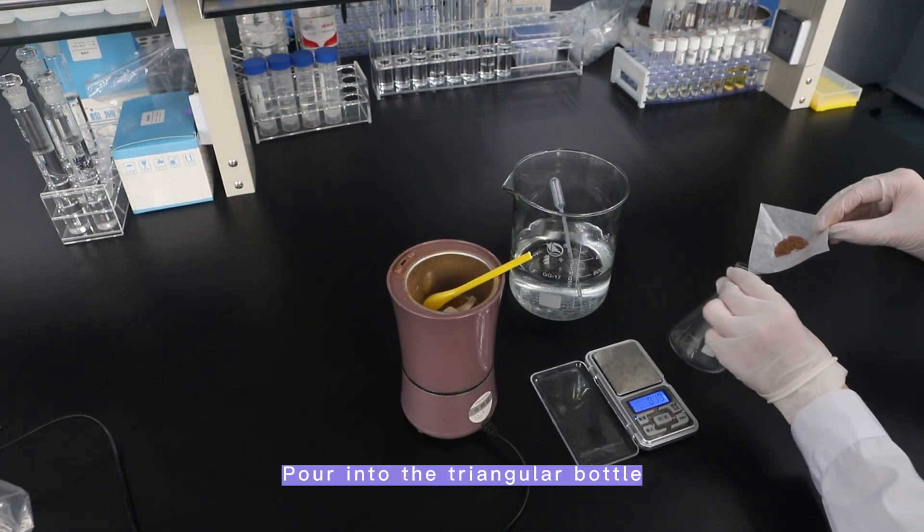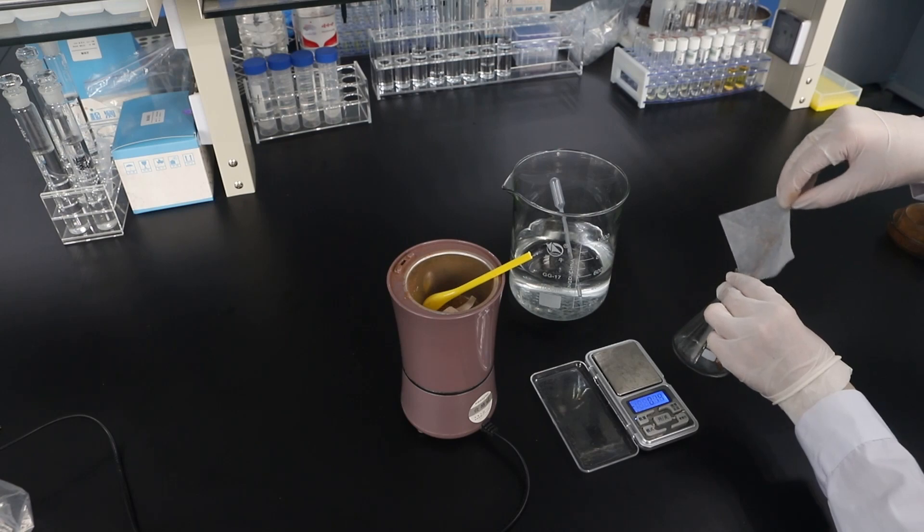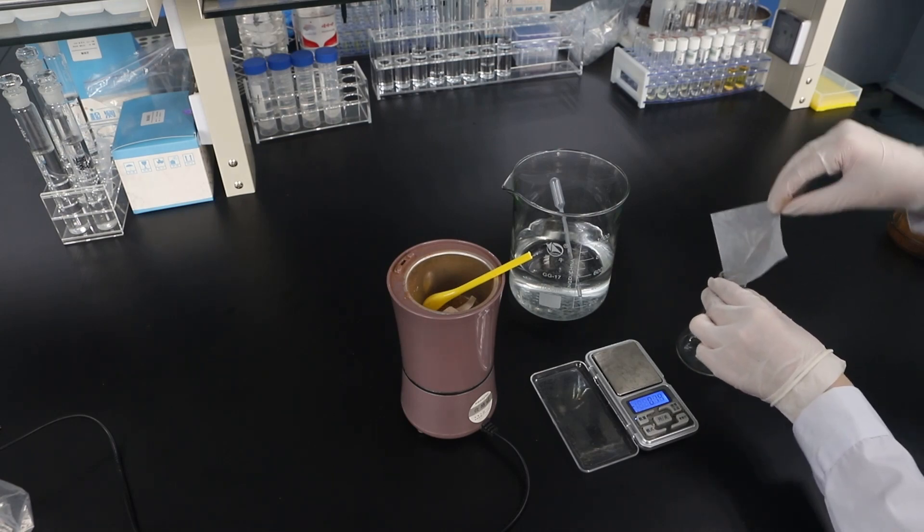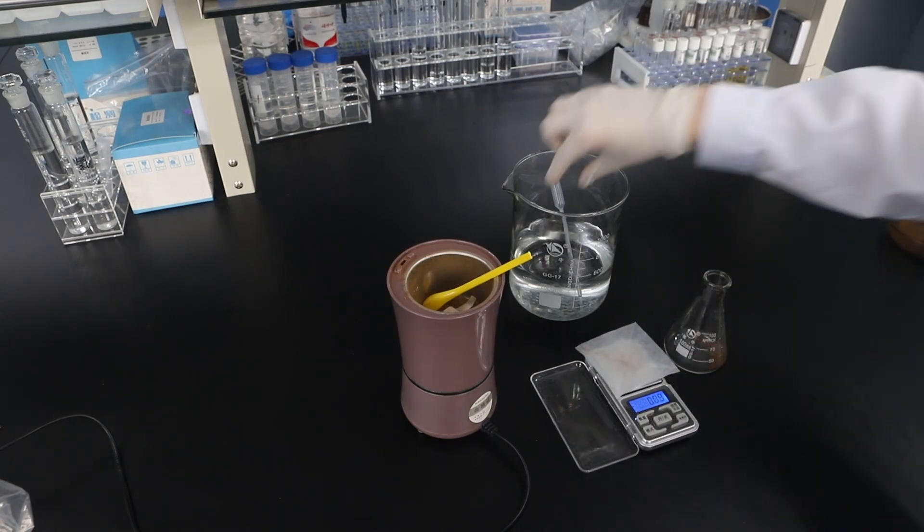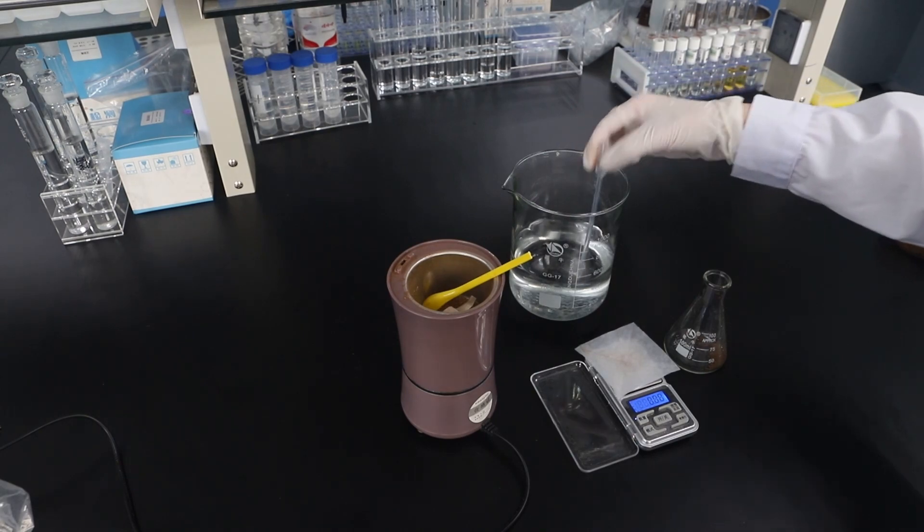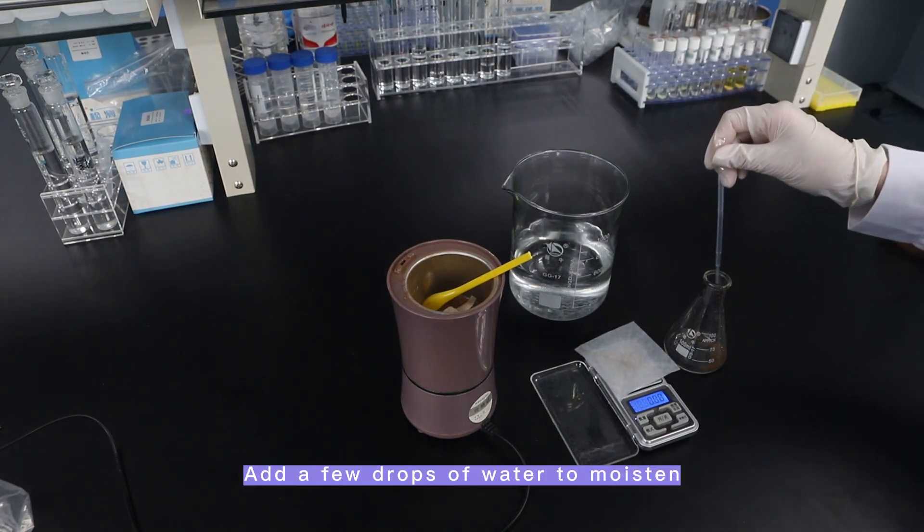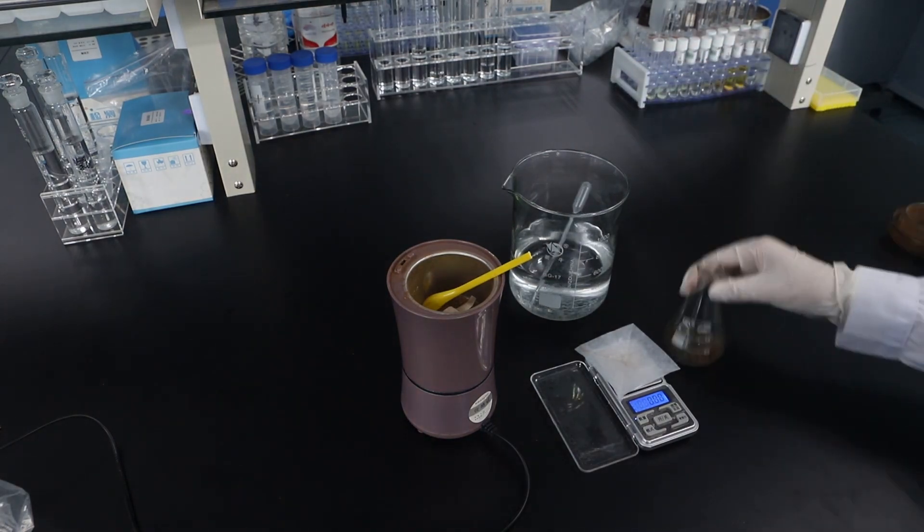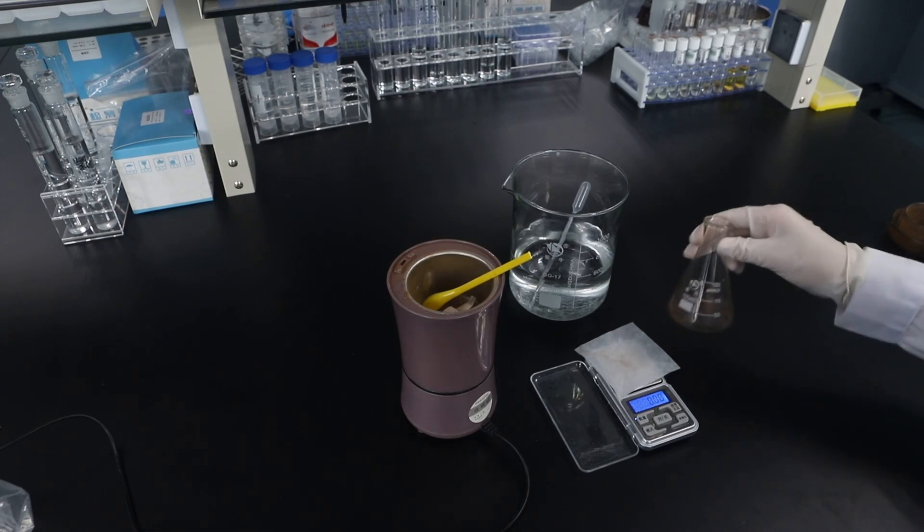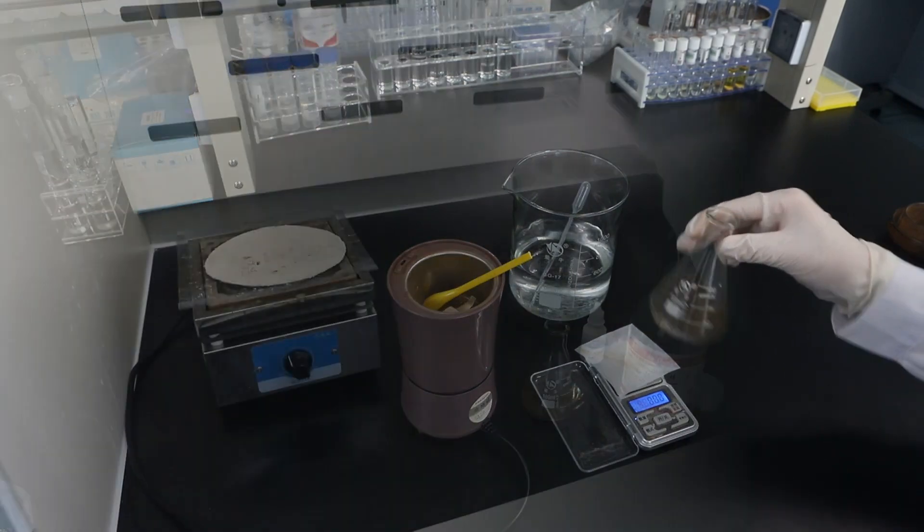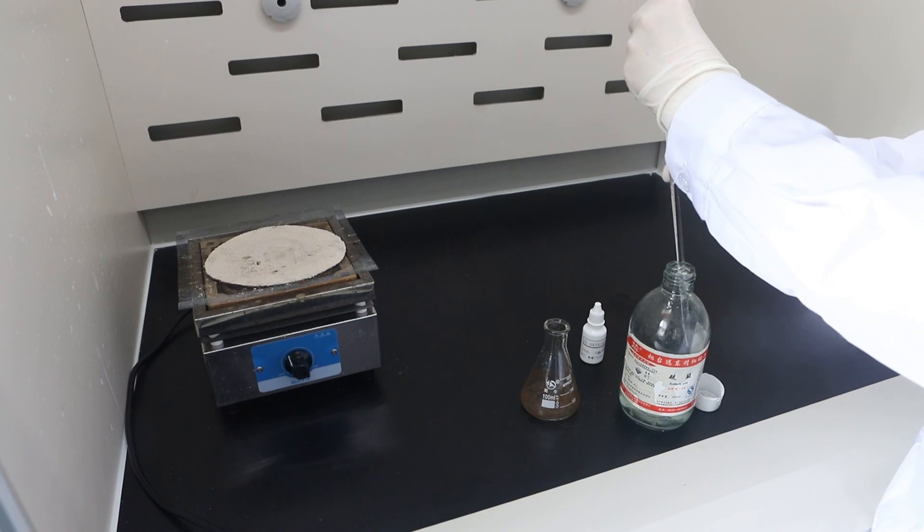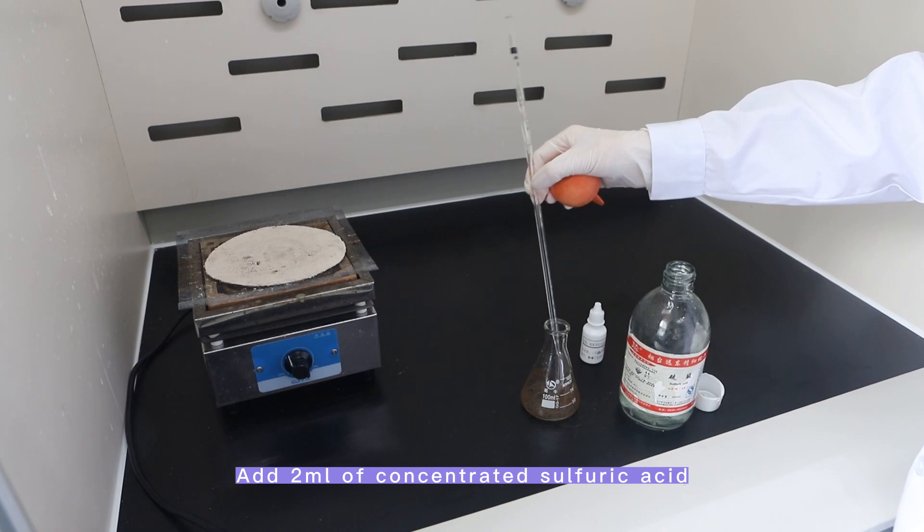Pour into the triangular bottle. Add a few drops of water to moisten. Add 2ml of concentrated sulfuric acid.